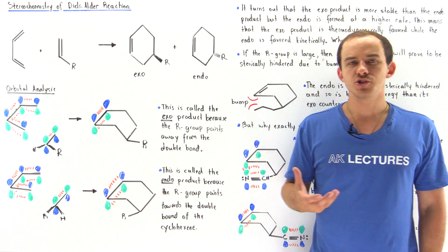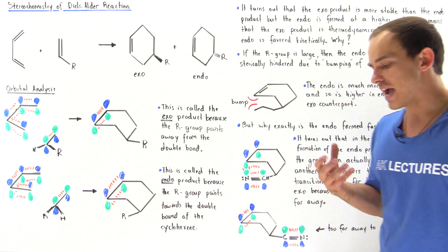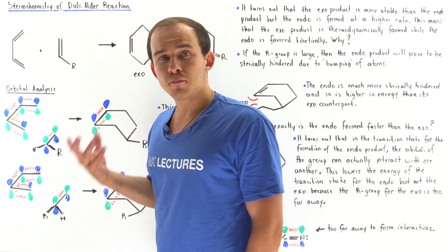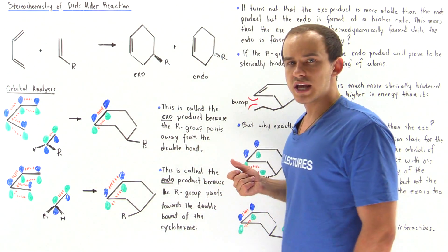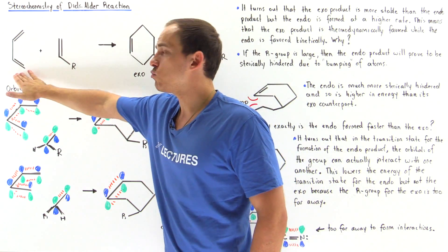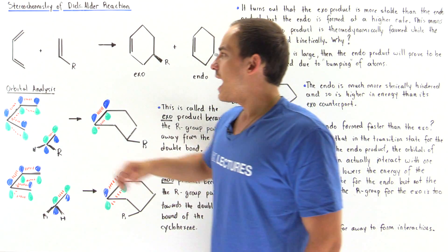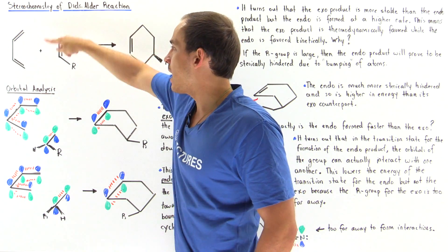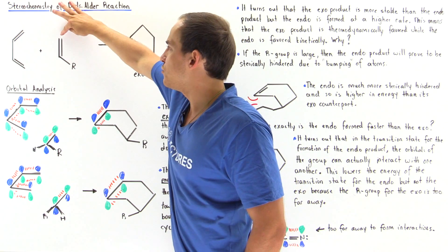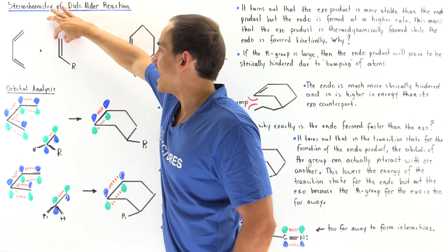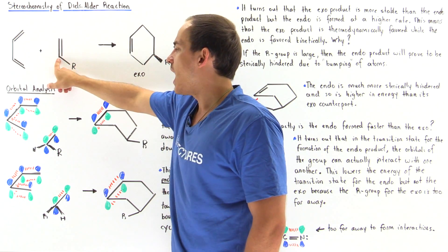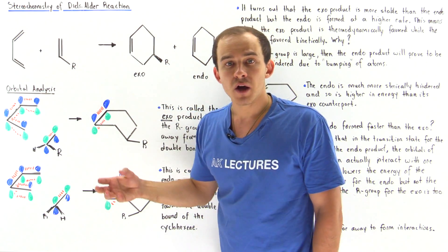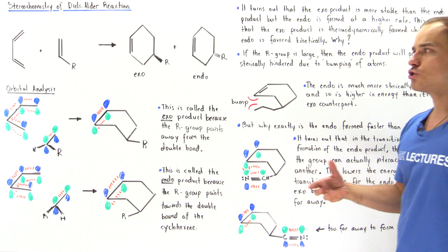Let's continue our discussion on the Diels-Alder reaction and take a closer look at the stereochemistry of the products formed. Suppose we have 1,3-butadiene as our diene molecule reacting with a simple alkene as our dienophile. On one carbon of the alkene we have two H groups not shown, and on the other carbon we have an H group and an R group, which represents any arbitrary functional group.